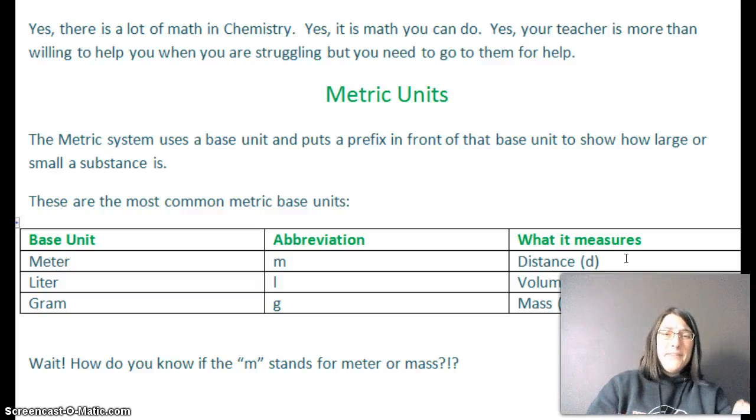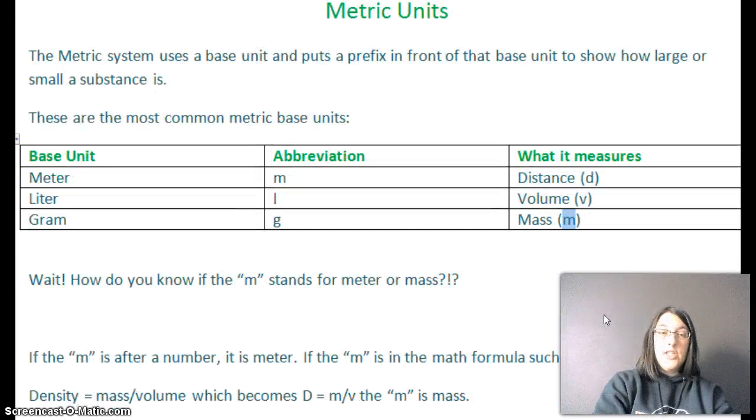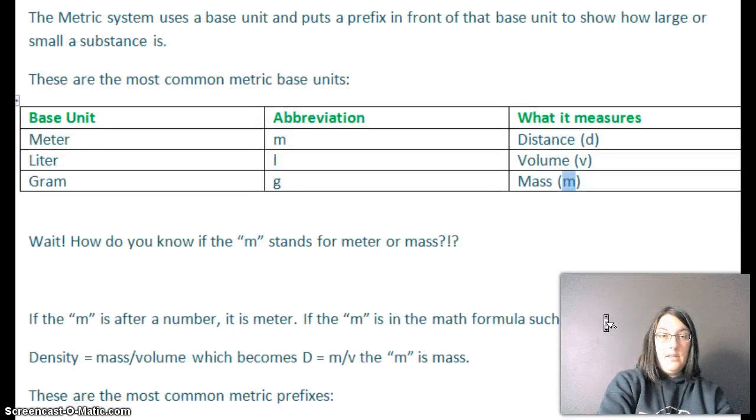Wait a minute. How do you know if the M stands for meter or mass? I just told you meter is abbreviated M. And over here, mass is abbreviated M. Yes, they are both lowercase M. So how do you know if the M is for meter or the M is for mass? Answer is, if the M is after a number, it's the meter. If M is in a math formula, such as density equals mass over volume, which becomes D equals M over V, the M is mass. So if they're using the M as a variable, it's the variable for mass. If it's after a number, then it's always meter. So you got to use it in context.